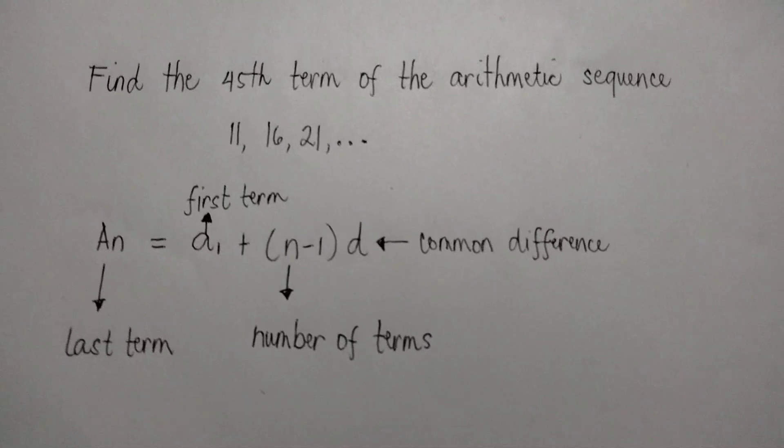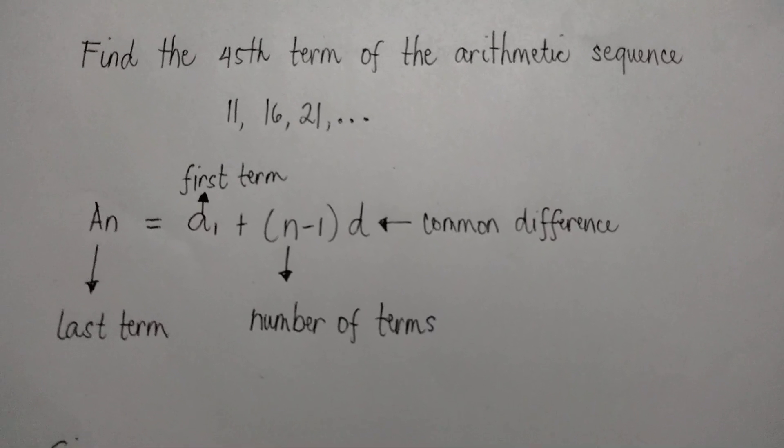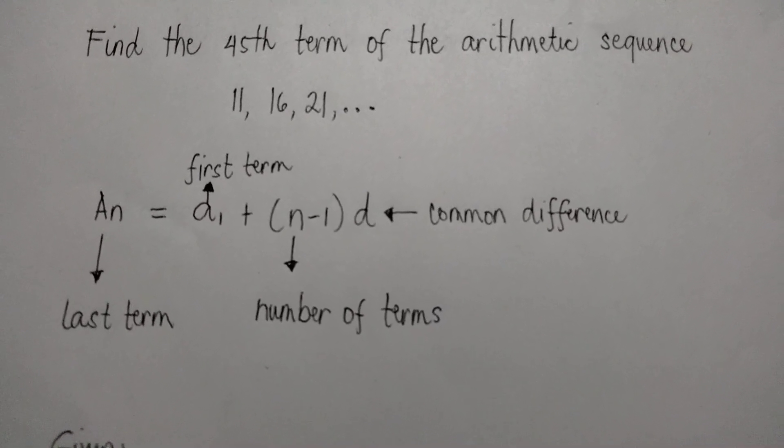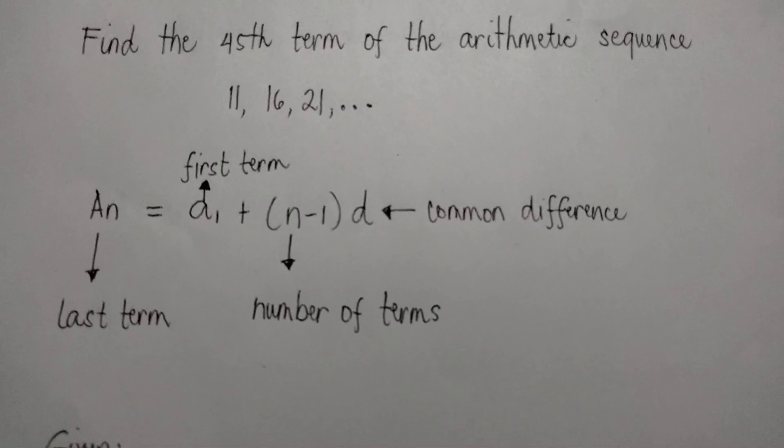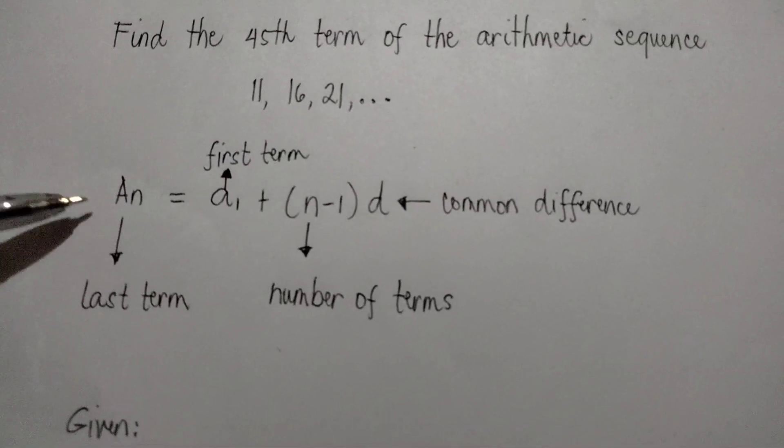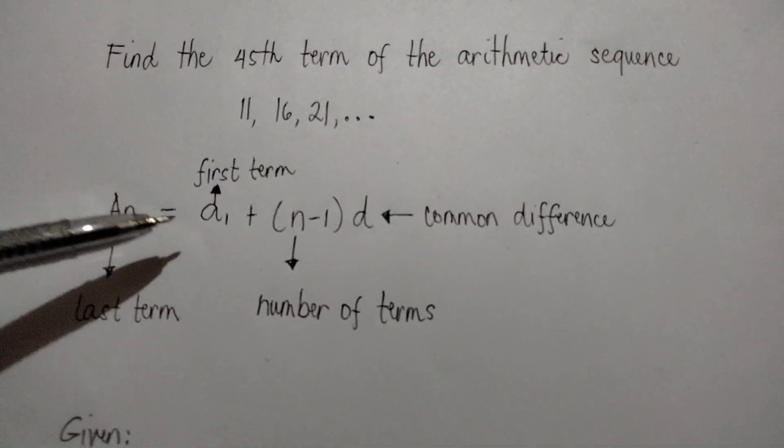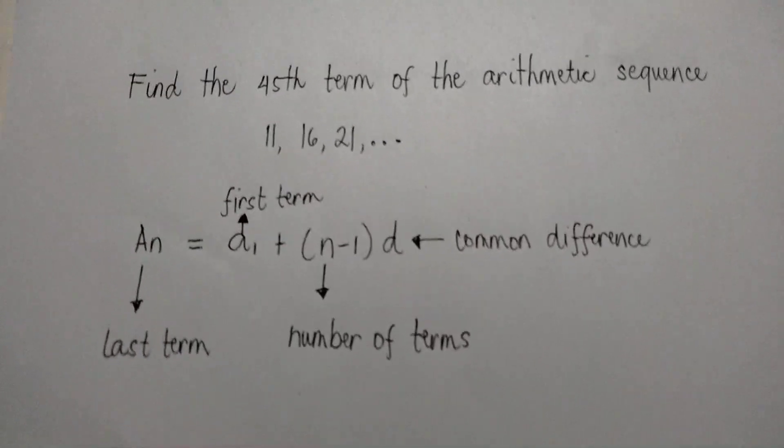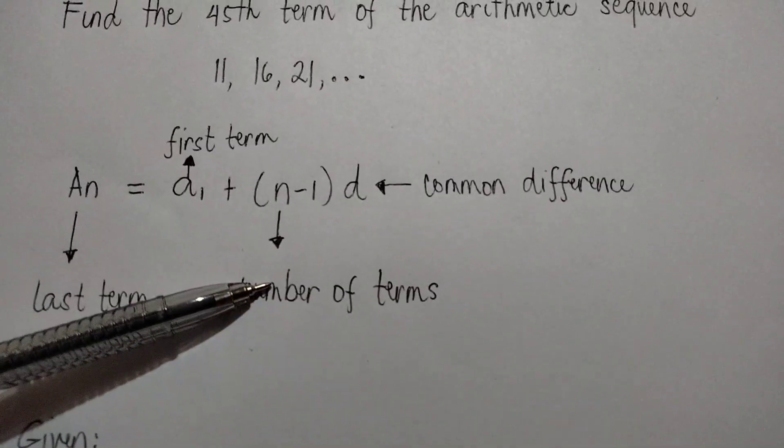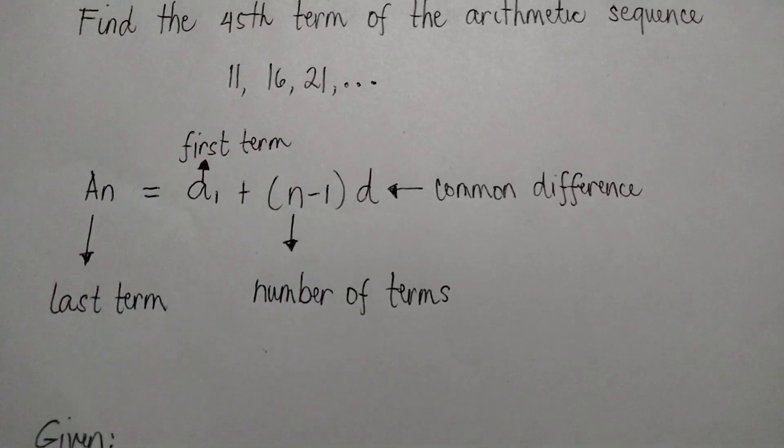Here, we are going to use the formula a sub n equals a sub 1 plus the quantity n minus 1 times d. a sub n is the last term, a sub 1 is the first term, n is the number of terms, and d is the common difference.